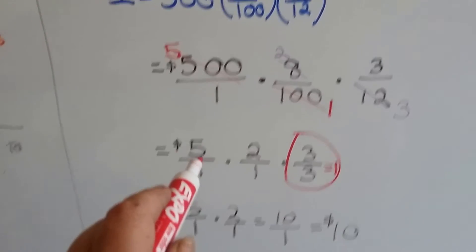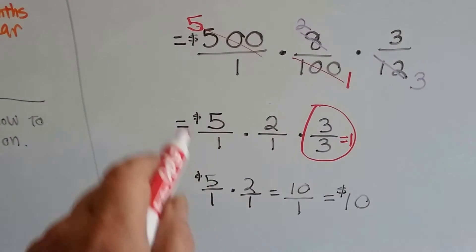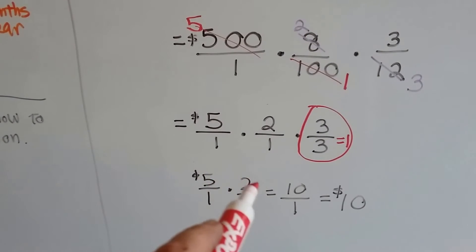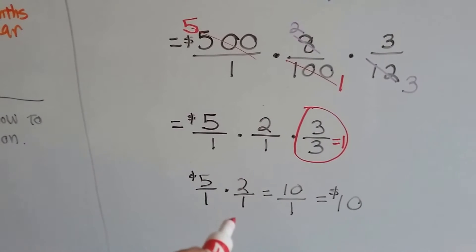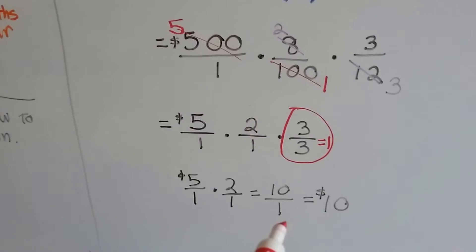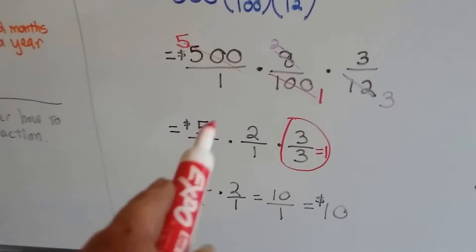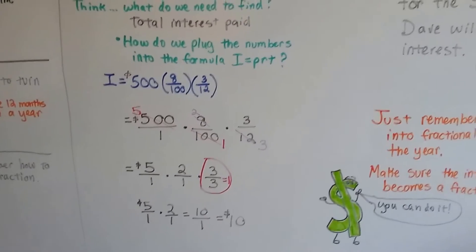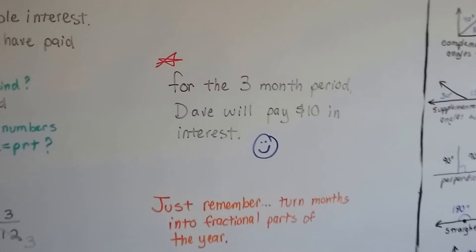We just need to worry about this part of the problem. Now we've got five times five over one times two over one. Five times two is ten, one times one is one. We've got ten over one, that's ten. Because we were dealing in dollars, the amount of the interest paid is ten dollars. So for the three-month period, Dave will pay ten dollars in interest.